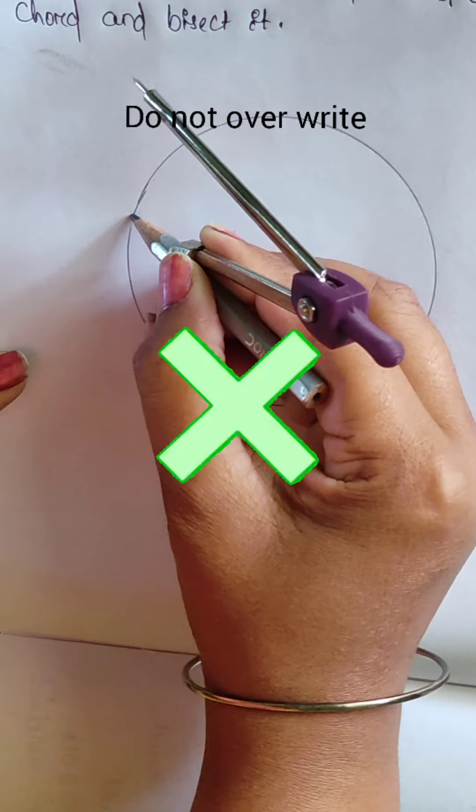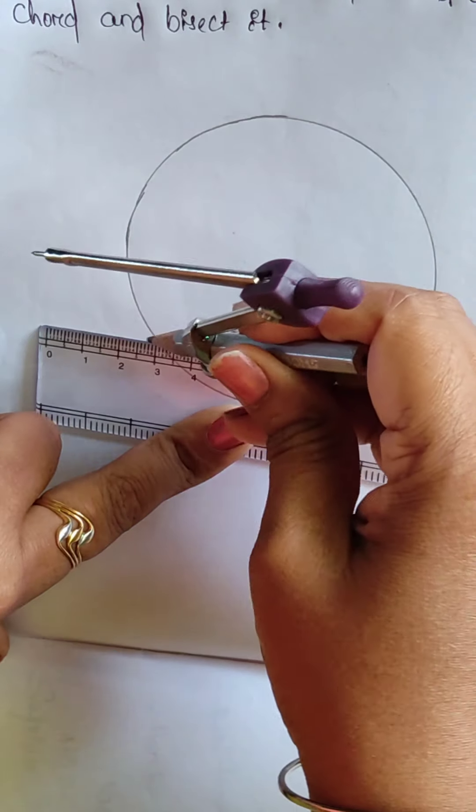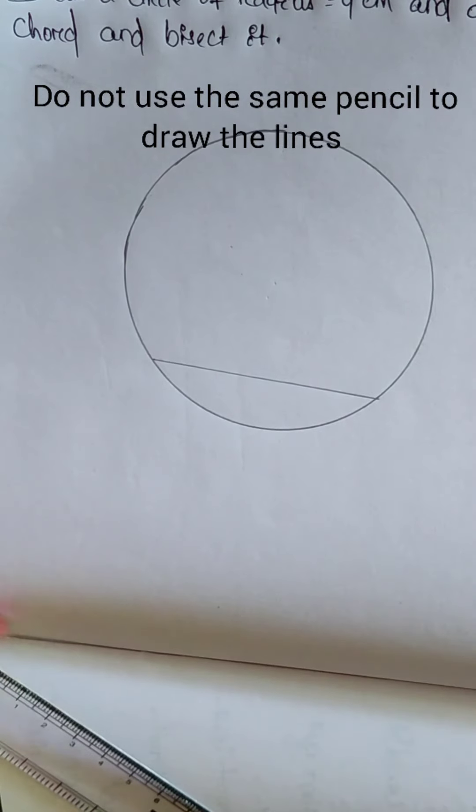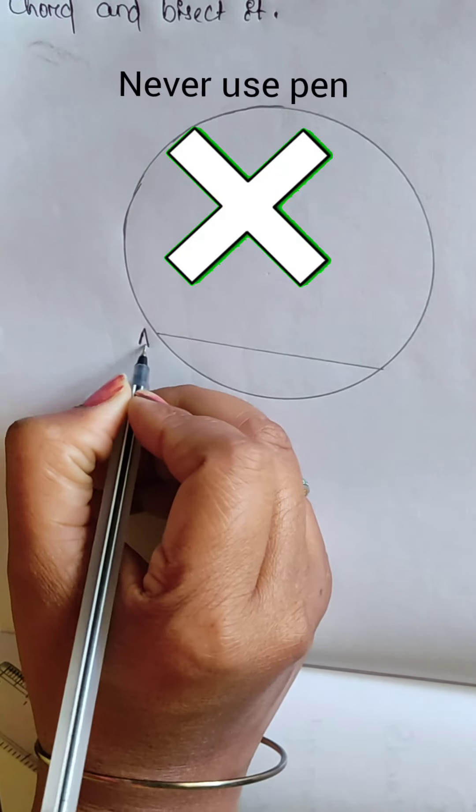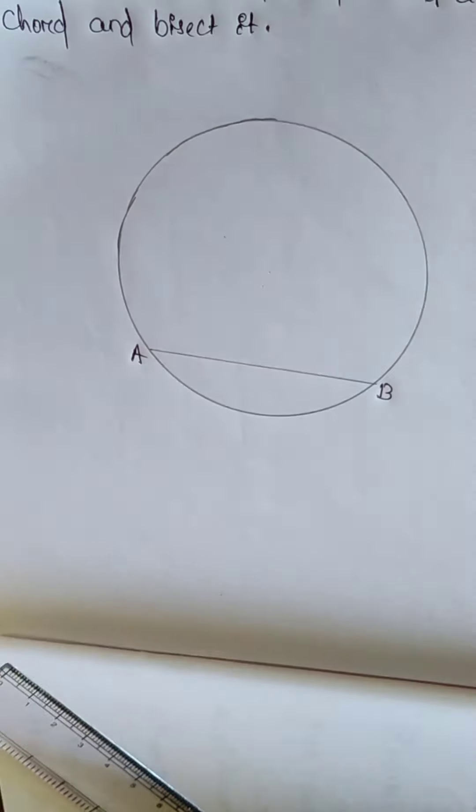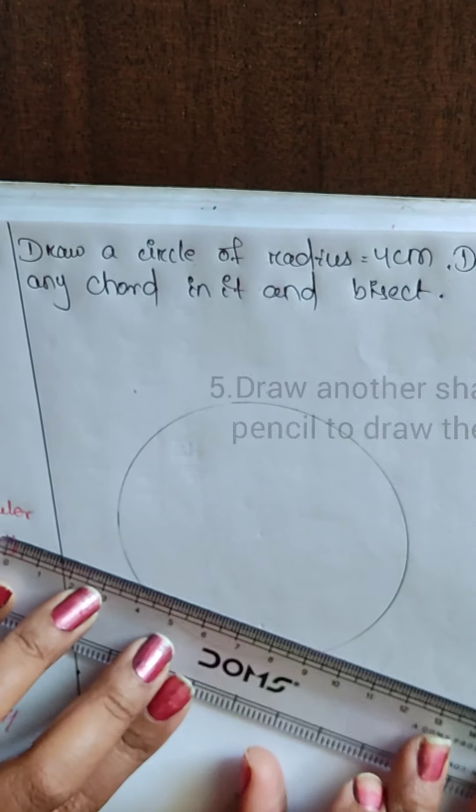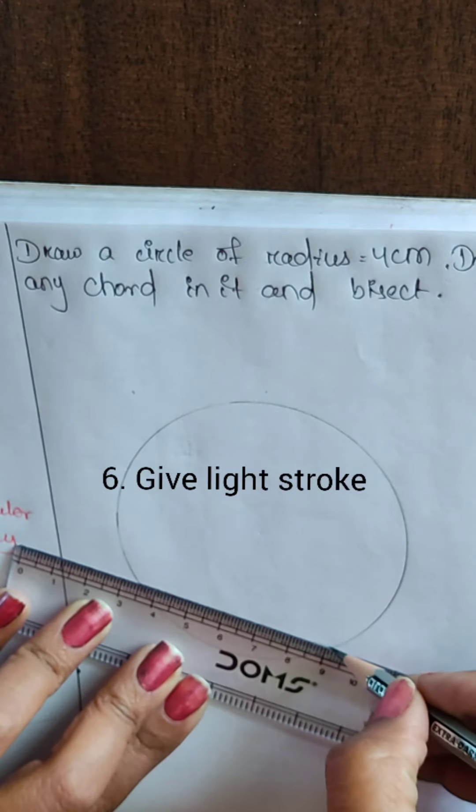Do not overwrite. Absolutely wrong. Even if you do, do not use the same pencil to draw the lines. Never ever use pen. You will get negative marking. So, what you need to do. Rule number five.